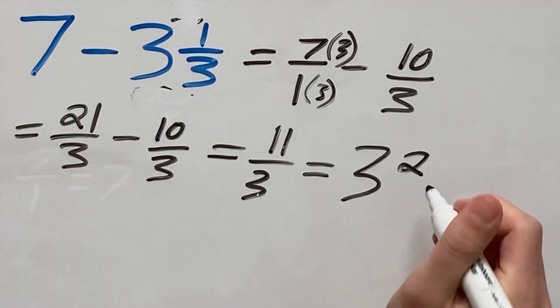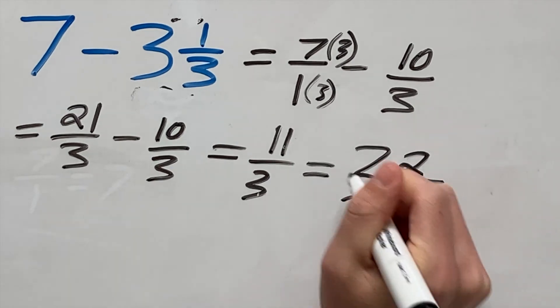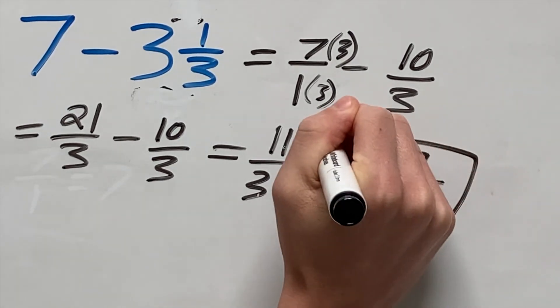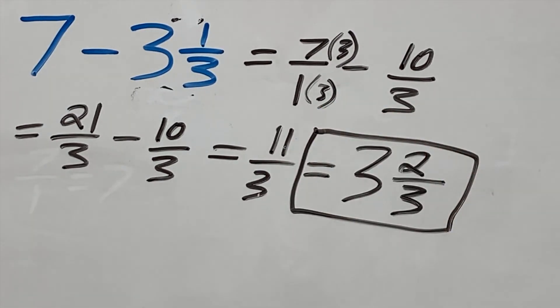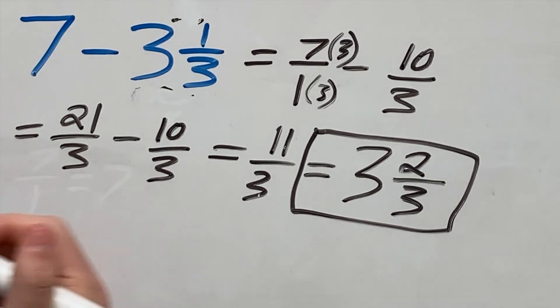3 and 2 thirds with our denominator staying as 3. So the answer to this problem where we subtracted a mixed number from a whole number is 3 and 2 thirds.